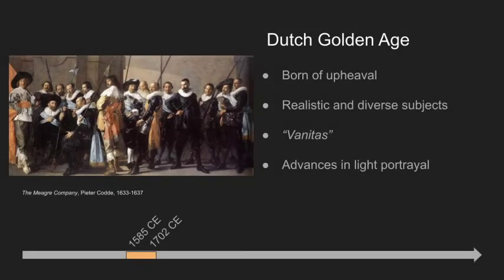The Dutch Golden Age was a movement fueled by the colonial wealth of the Low Countries. Painters pursued the realist motivations of the Renaissance with a variety of subjects, with a keen interest in the perils of pleasure-seeking, known as vanitas. The church's decline was evident as themes like still life, portraiture, and landscape realism were pursued.